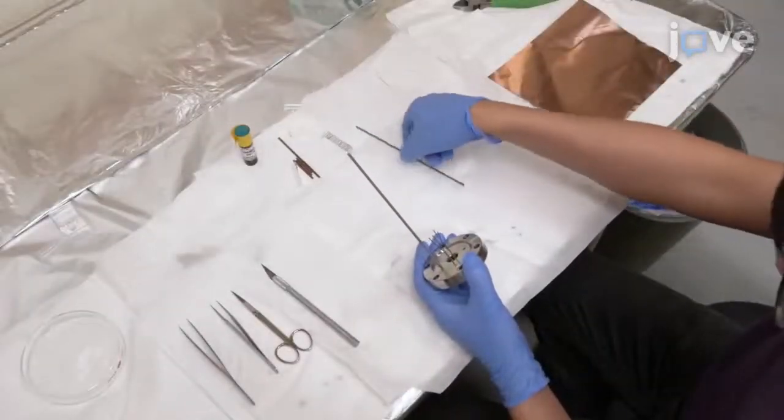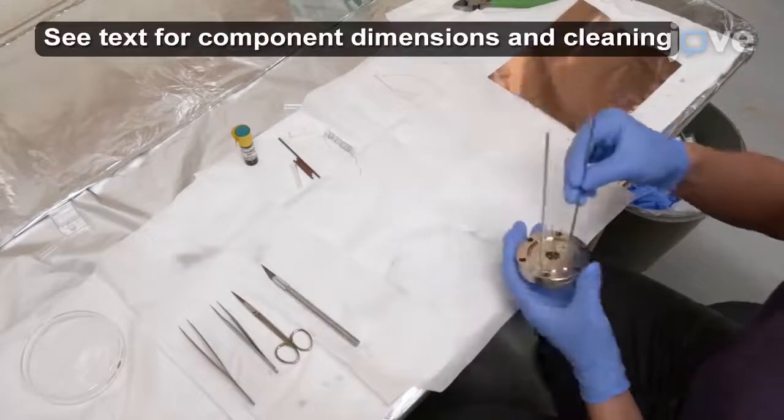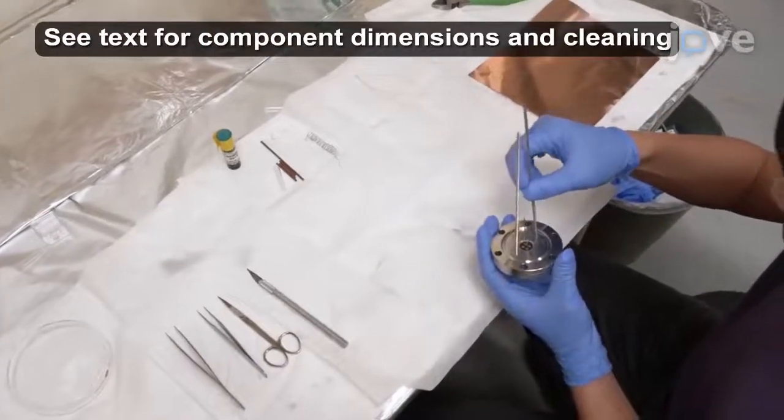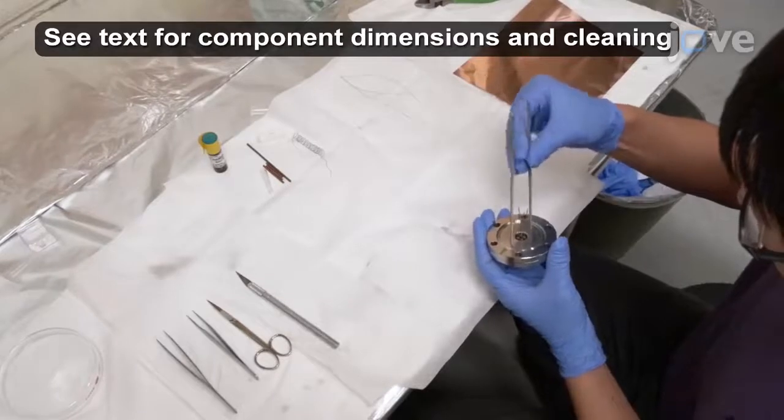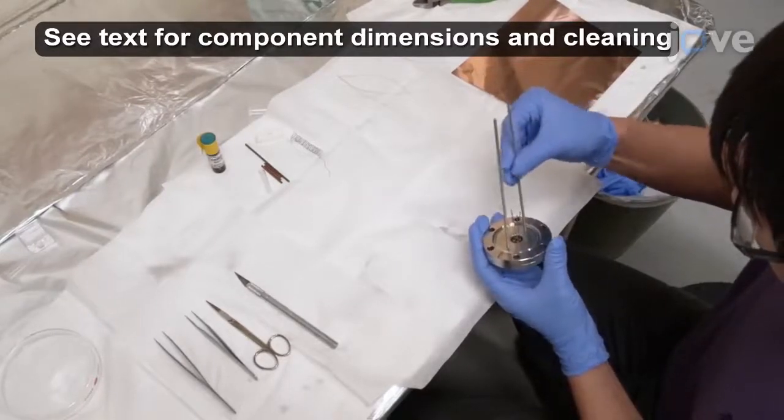To begin assembling the Knudsen cell, clean the cell components and mount two seven-inch long threaded steel support rods in holes drilled through a four-pin CF flanged stainless steel power feed-through.